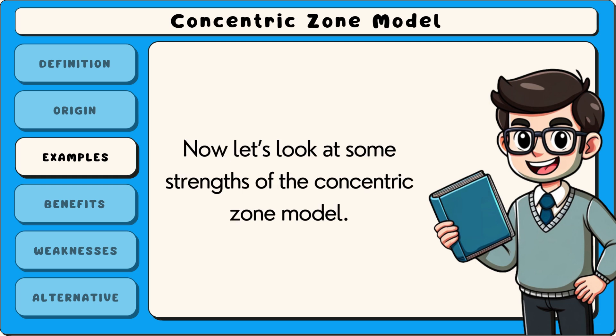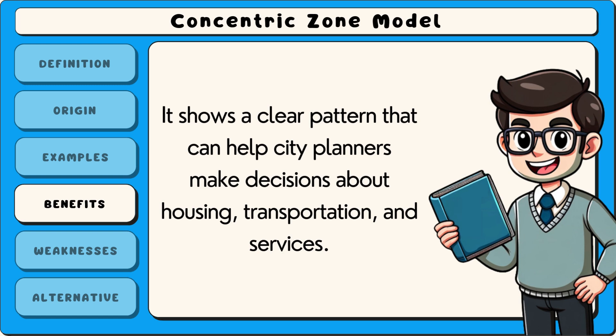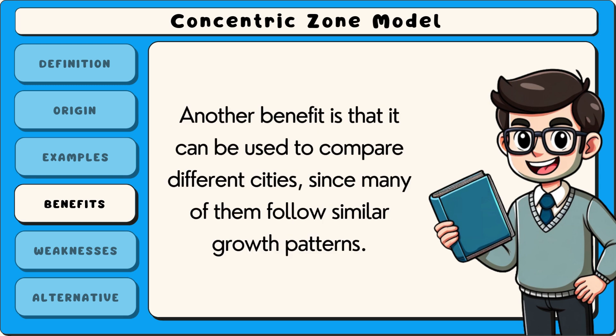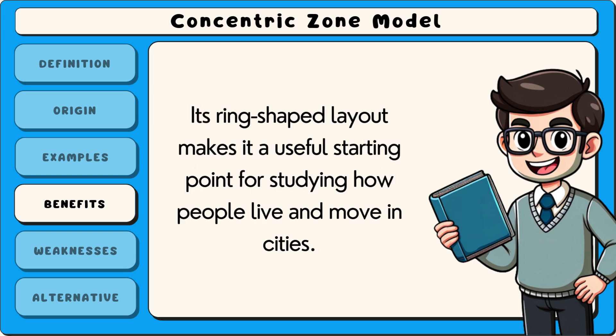One strength of the concentric zone model is that it gives a simple way to understand how cities grow and change over time. It shows a clear pattern that can help city planners make decisions about housing, transportation and services. Another benefit is that it can be used to compare different cities, since many of them follow similar growth patterns. The model is also helpful for teaching students about urban areas in an easy to understand way. Its ring-shaped layout makes it a useful starting point for studying how people live and move in cities.